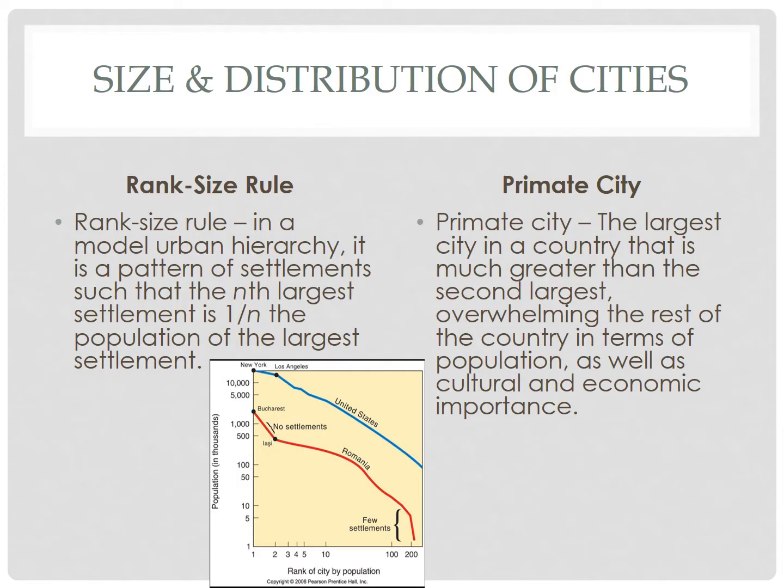We're going to start tonight with the rank size rule, which is a model based on population size. In a model urban hierarchy, it is a pattern of settlements such that the nth largest settlement is 1 over n the population of the largest settlement.